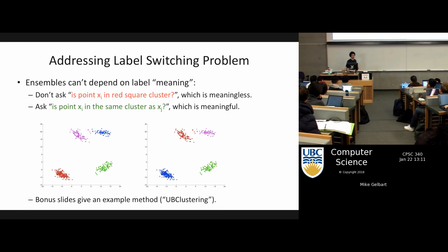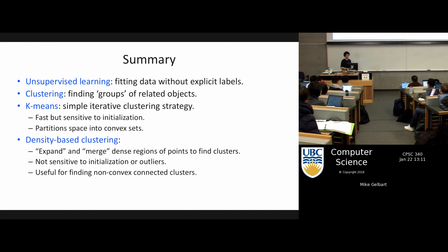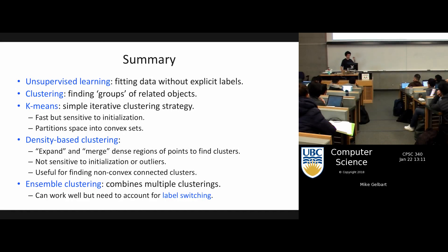There's more on this in the bonus slides as well. This is the summary slide for Friday's lecture: we introduced unsupervised learning, we introduced clustering, we talked about k-means, we talked about density-based clustering, we compared them, we played around with some 2D examples in the Jupyter notebook, and just now we talked about something that can go wrong if you try to naively ensemble clusterings and the seed of an idea for how you might get around that.